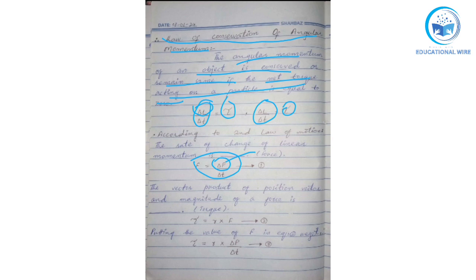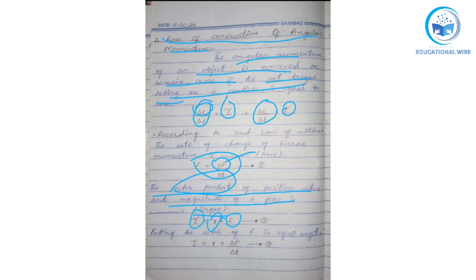The second definition says that the vector product of the position vector and the magnitude of a force is called torque. Mathematically, the vector product — remember, it is a vector product — of position vector r and force f is called torque. This is our equation 2.